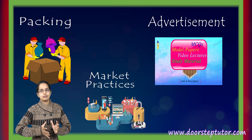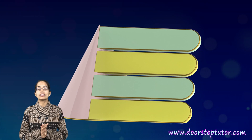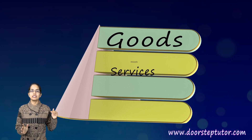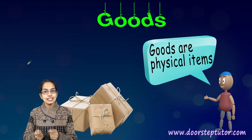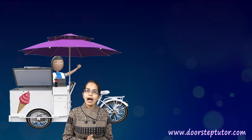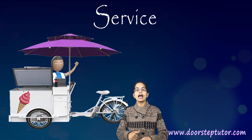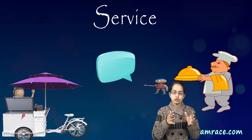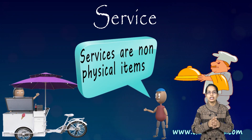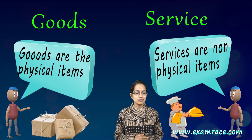We also need to understand four basic things in economics: goods, services, needs, and wants. Goods are physical items — for example, ice cream is a good. But if I'm providing that ice cream to you, that's a service — I'm serving it to you. Services are non-physical items, while goods are physical items that are delivered.